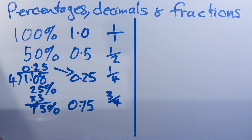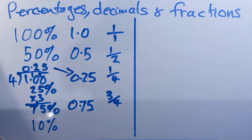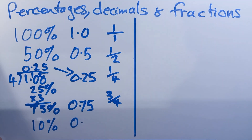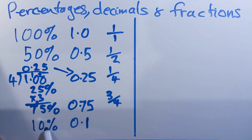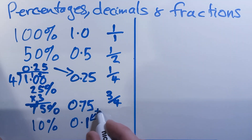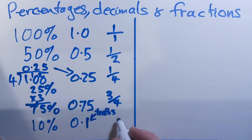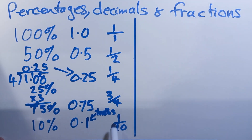Now some other ones that are quite nice to work with. We can have 10%. Now 10% you can think of as 0.1 — we just move the decimal point twice. And if we've got this as a fraction, the 1 is in the tenths column, so it's 1 over 10. So if we had 2 tenths — 0.2, 20% — we'd have 2 over 10.